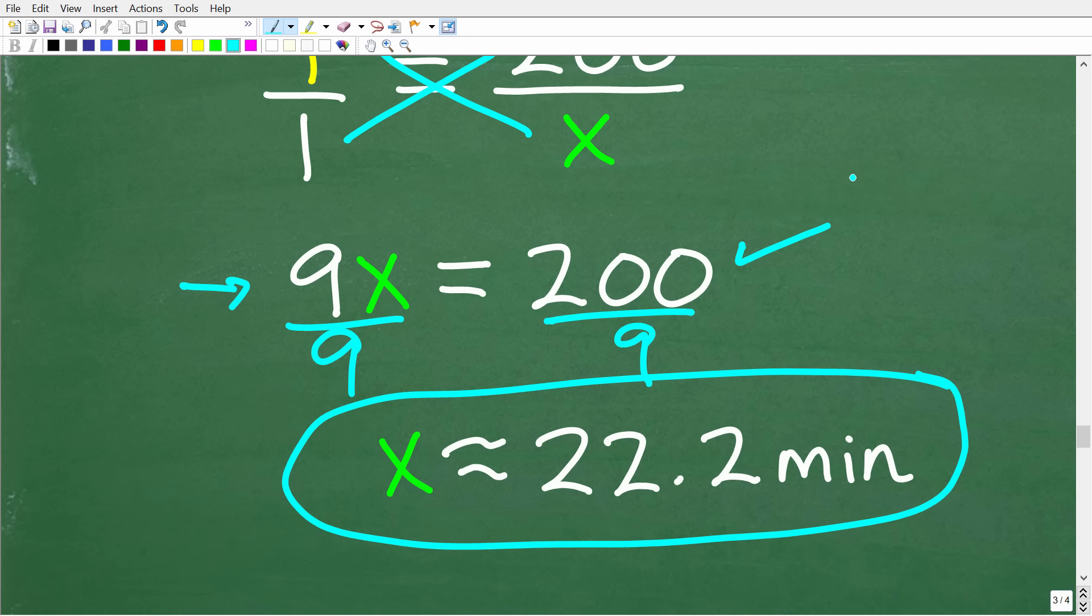And this problem or this answer makes sense, right? Because we know the fastest time that Sam can do this job by himself is 40 minutes. So, if Ed is helping him out, well, it should cut the time kind of in half. And you can see here that this answer is kind of like half of the time it takes Sam alone doing the job.